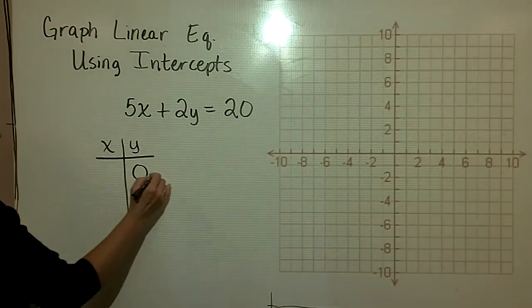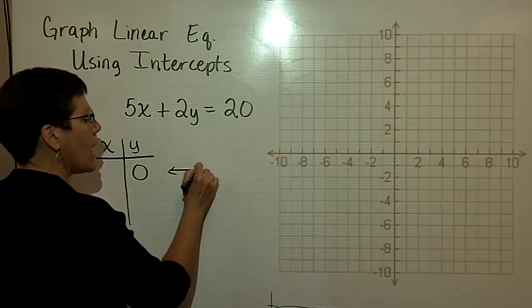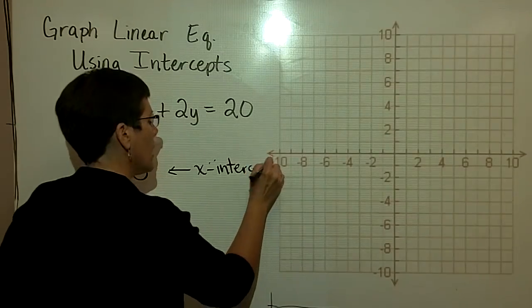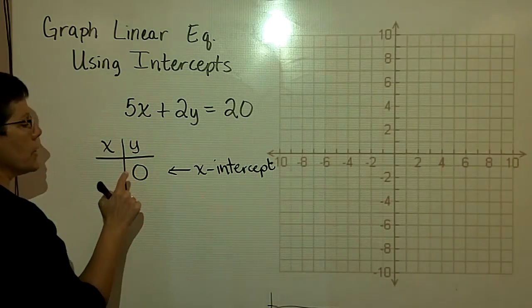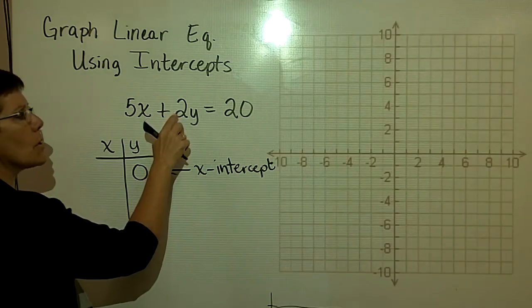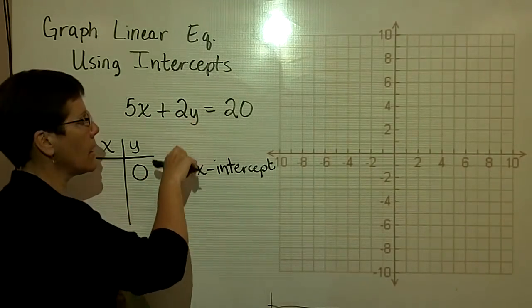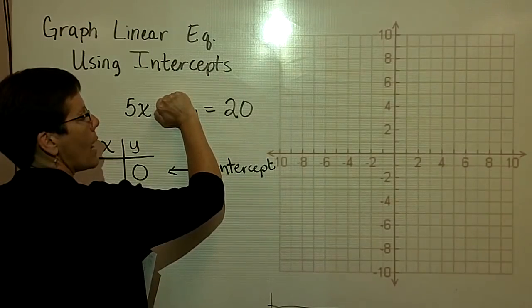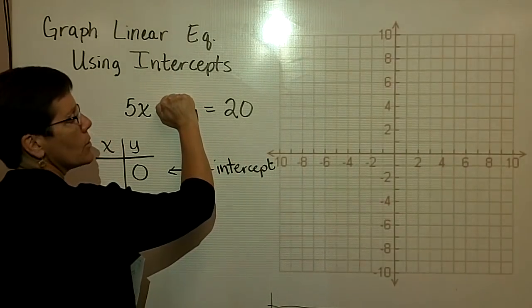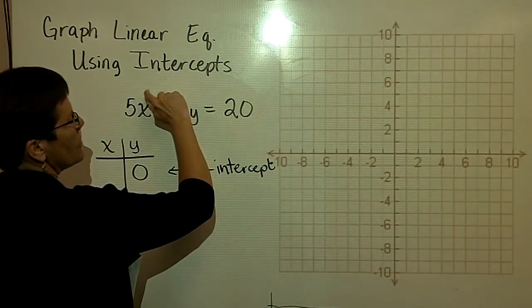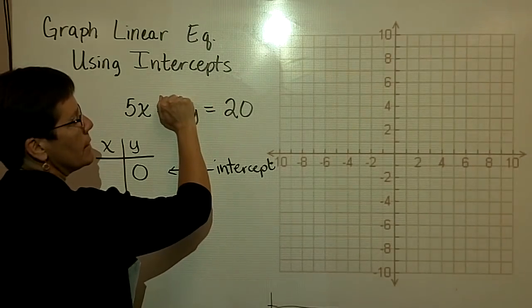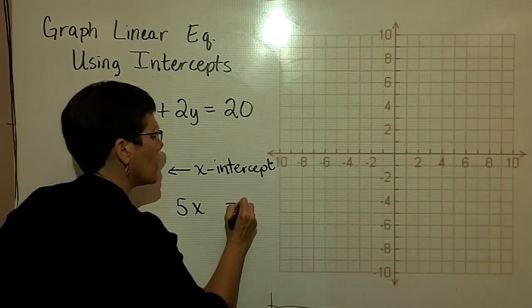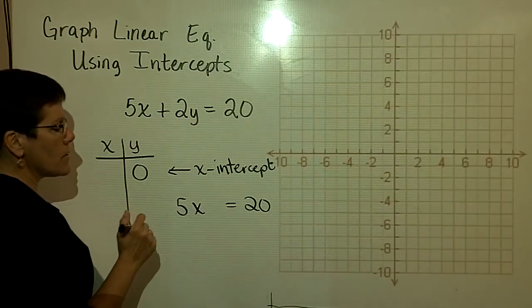So this one is called, let's put it right here, this is called the x-intercept. And so what I do is I let y be equal to zero right there. So 2 times zero is nothing. So what I do is I often just put my hand over the term that's got y when I want to find the x-intercept. I put my hand over that, and what I'm left with is this 5x equals 20. Again, 5x equals 20 because 2 times zero is nothing.